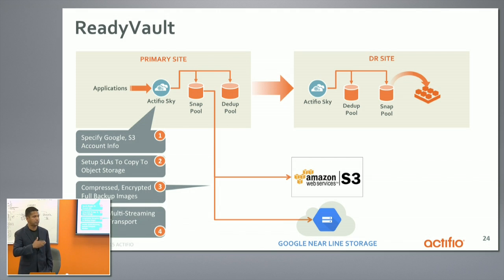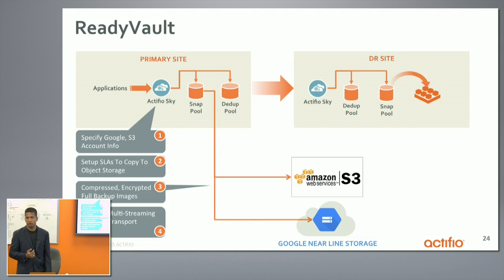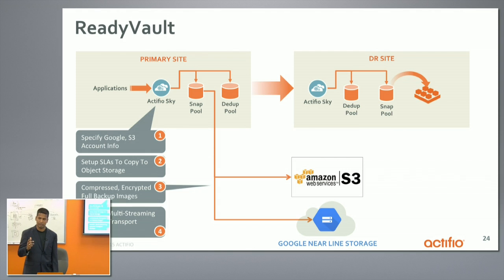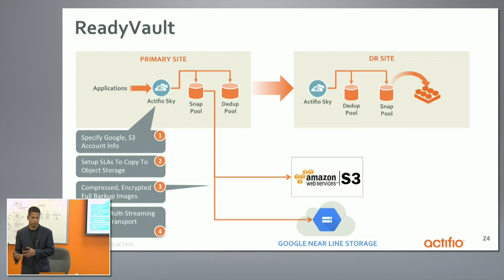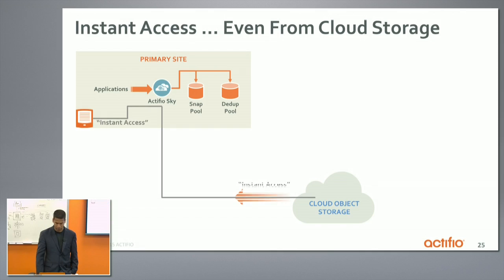We have multiple parallel streams that somebody can provision so that they can get the data out as fast as they can, or they can throttle the rate at which data goes into object storage by reducing the number of streams. So that's how data is ingested into the ActiveVault, the ReadyVault object storage. And that can be the cloud, or S3 on-site also — it could be either one. It's an S3 API that we go to.